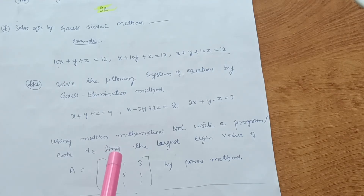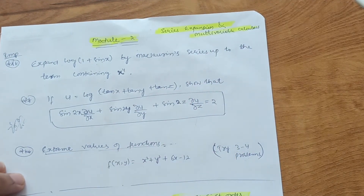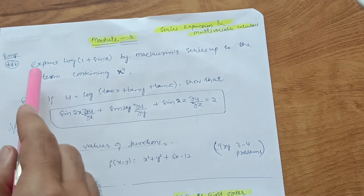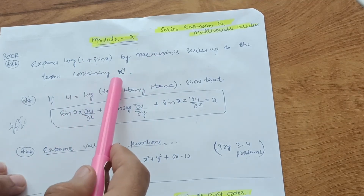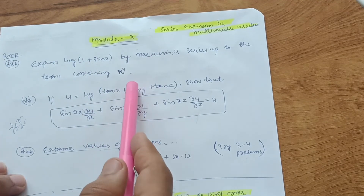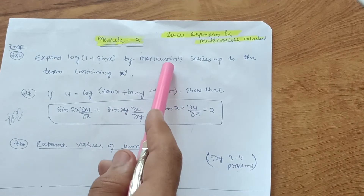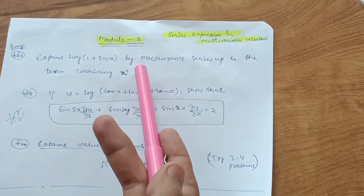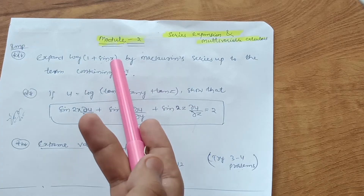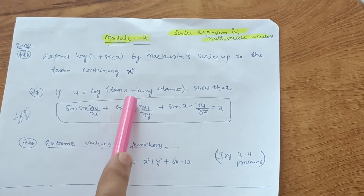The second module is Series Expansion and Multivariable Calculus. Only one module differs between branches; the rest are the same. The most important question is: expand log(1 + sin x) by Maclaurin's series up to the term containing x⁴. If you are good at remembering trigonometric identities and formulas, applying them to the Maclaurin series makes it simple. Sometimes they ask log(sec x) or log(cos x) — try three or four problems; you just differentiate four times to get the x⁴ term.